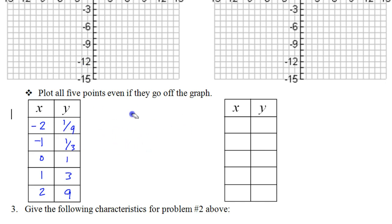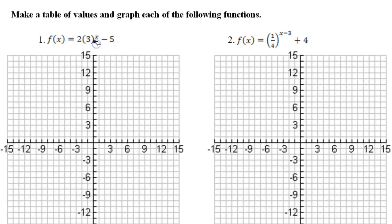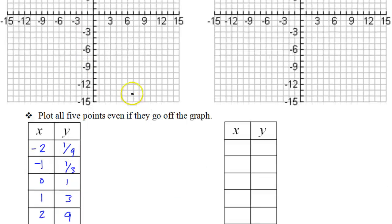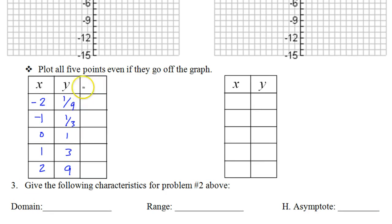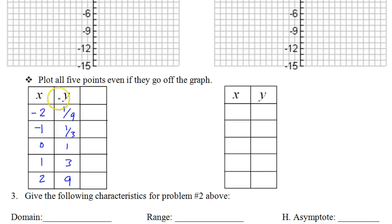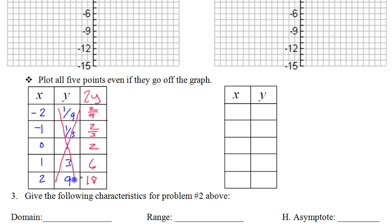Before we go graphing these points, sometimes we need a third column. We need a third column when there is an a value, and there is an a value of 2. In this third column, we are going to do the a value. We had an a value of 2, so we're going to multiply all these y values by 2. So 2 times y gives us 2 ninths, 2 thirds, 2, 6, and 18. We can disregard the middle column now.